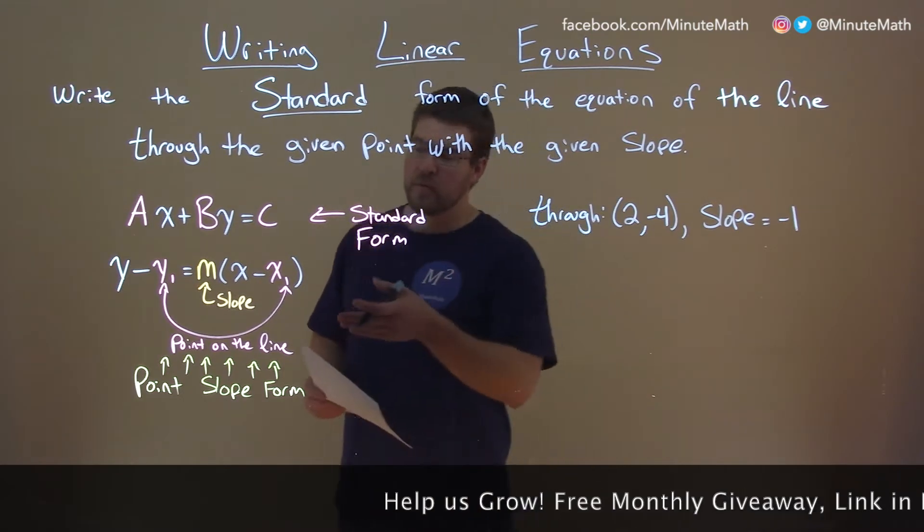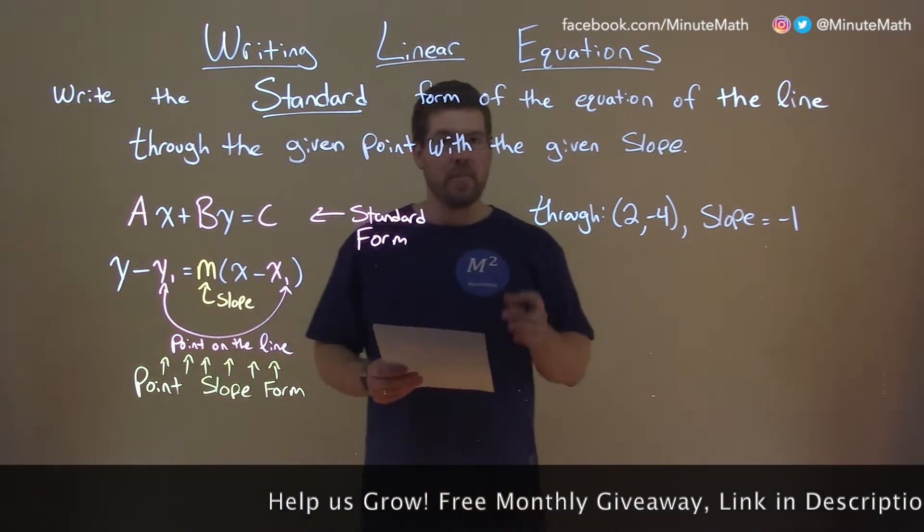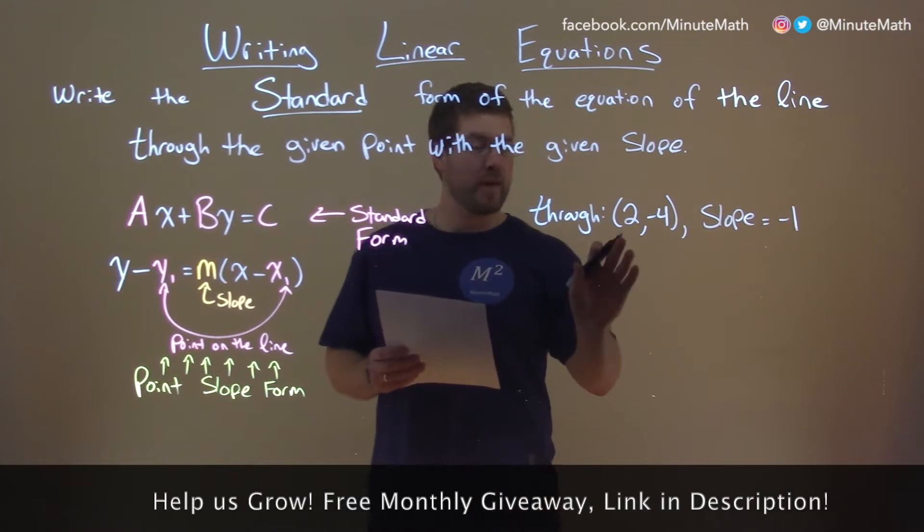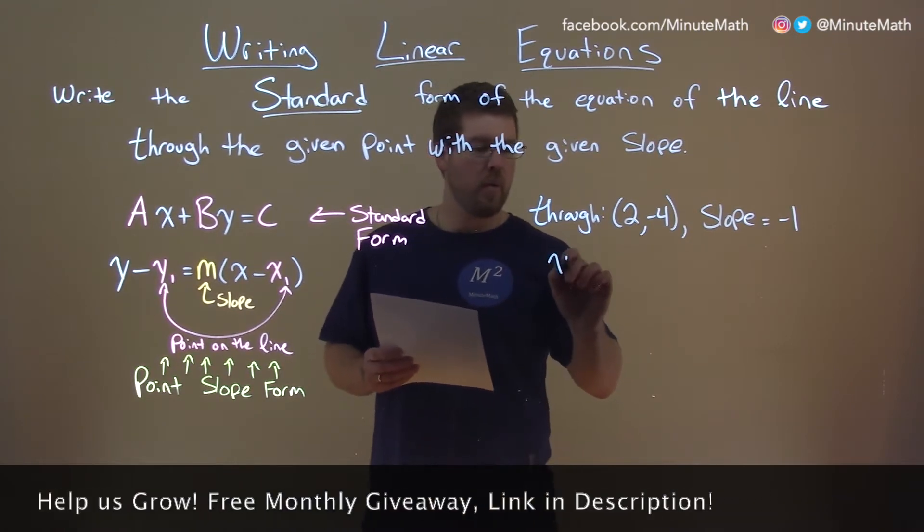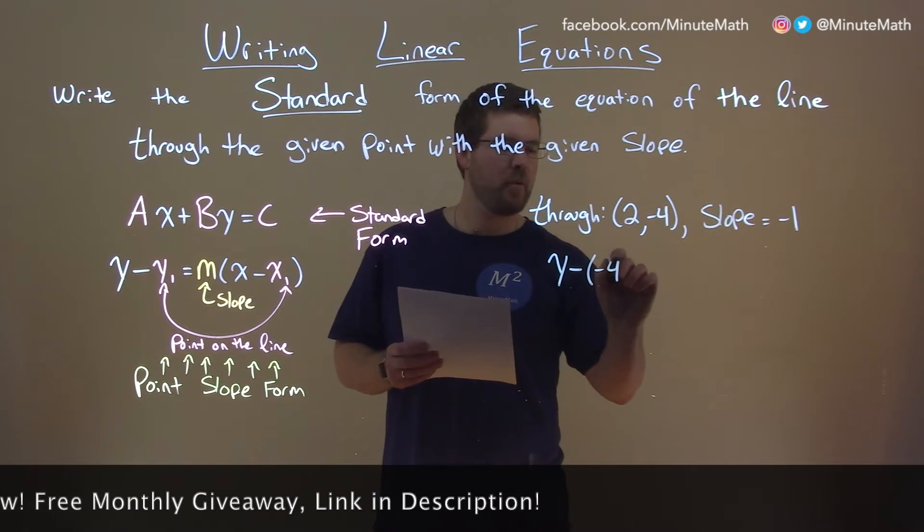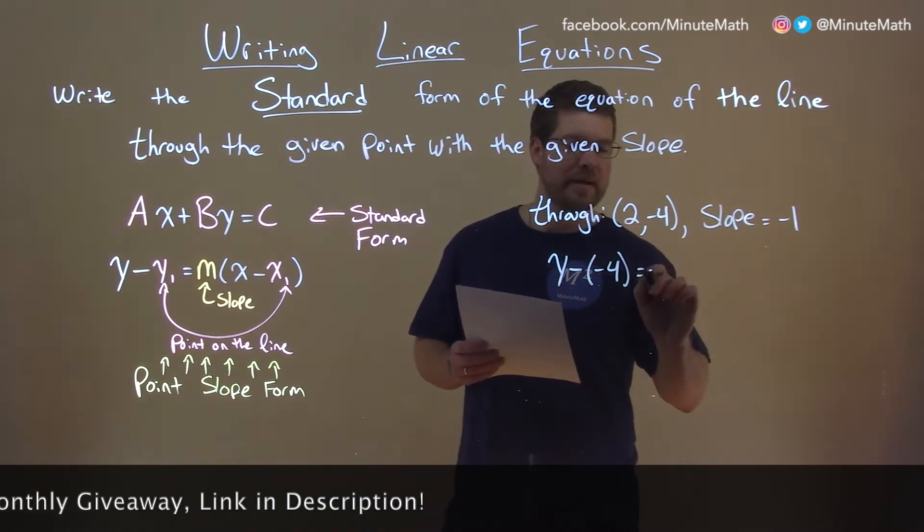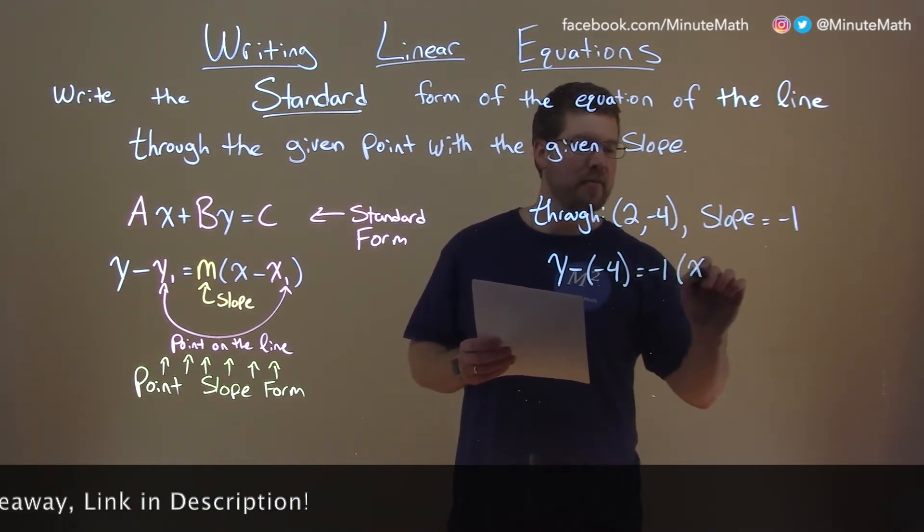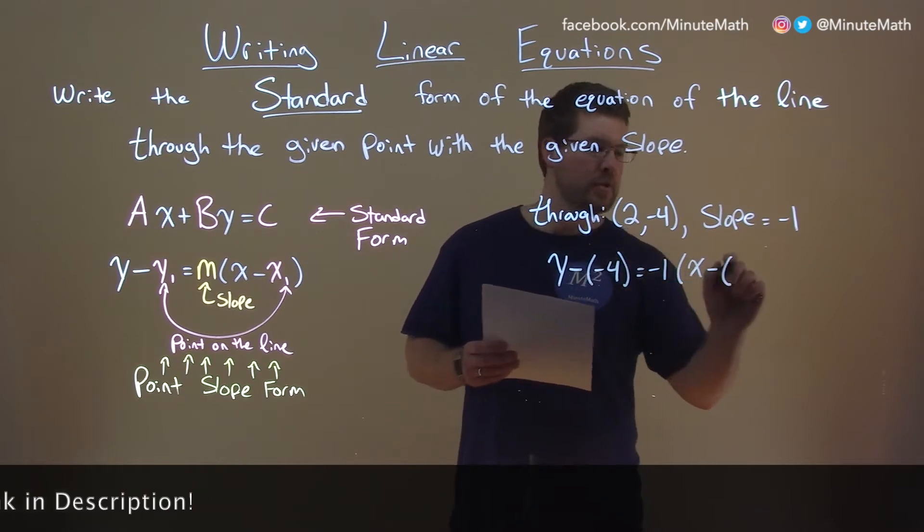First step is using point-slope form. So, let's do that. Let's write this in point-slope form. y minus y1, which is a negative 4, equals our slope, negative 1, times x minus x1, which is 2.